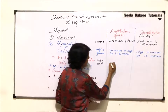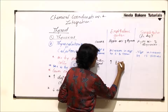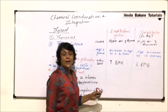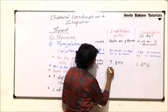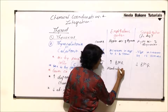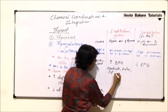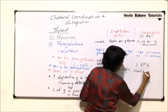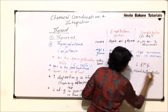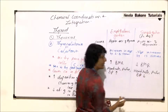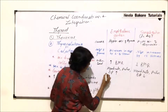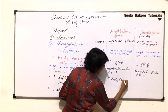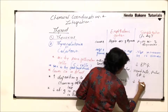Looking at symptoms: in exophthalmic goiter there is increased BMR, whereas in simple goiter there is decreased BMR. Heart rate, pulse, and blood pressure are all higher than normal in exophthalmic goiter, and lower than normal in simple goiter. Body temperature is increased in exophthalmic goiter and decreased in simple goiter.